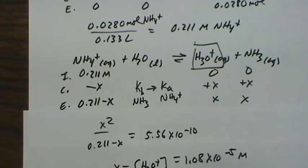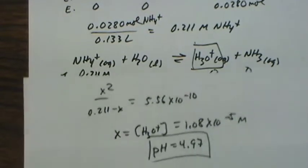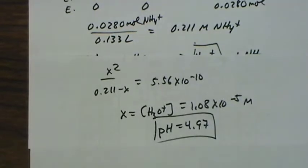So pH is 4.7, 4.97. It's less than 7. That's what it was supposed to be because the salt is an acidic salt.